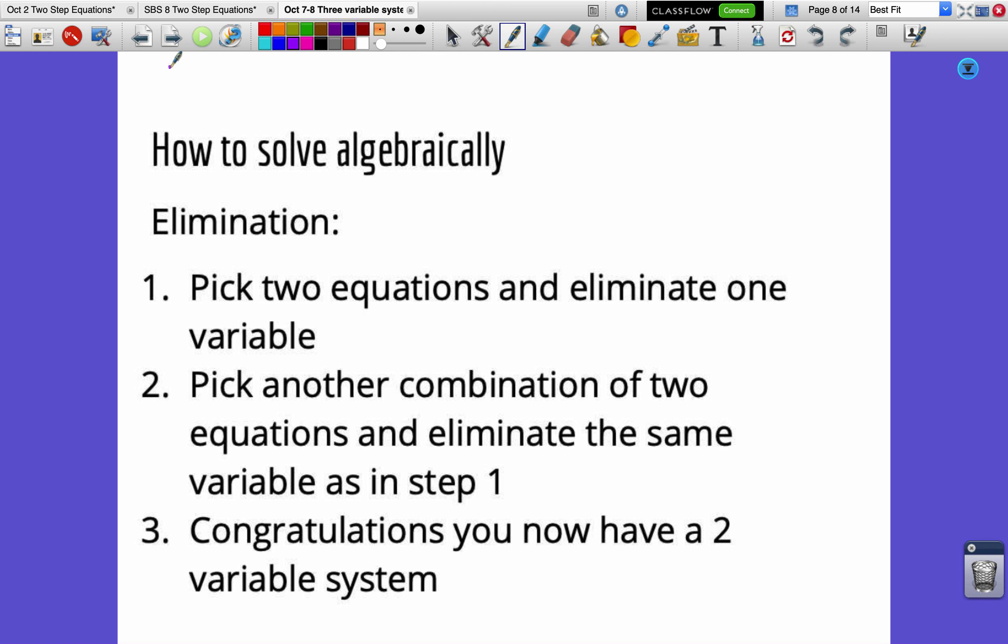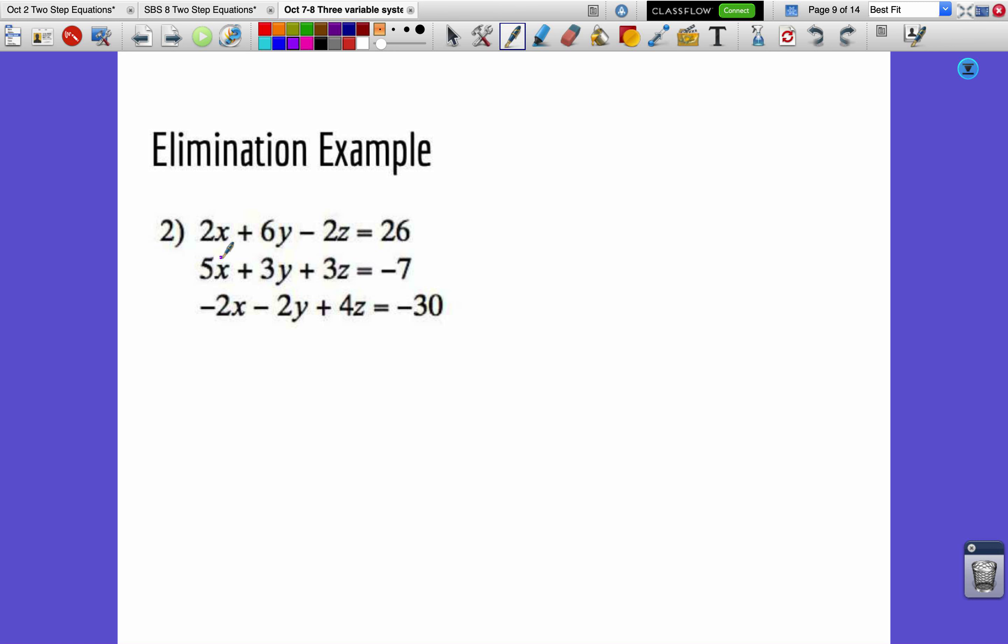All right. So we're going to try to solve one of these algebraically. Solving them graphically really isn't an option because it's so difficult to draw graphs of three-dimensional planes. So we've got to use our algebraic methods. So copy this down. Here are your three steps to solving by elimination. Number one, pick two equations and eliminate one variable. Number two, pick another combination of two equations and eliminate the same variable as in step one. And number three, congratulations, you now have a two-variable system, and we can solve that however we want. We can stick with elimination. We could use substitution. We could maybe graph it depending on what the equations look like.